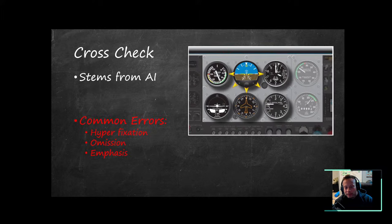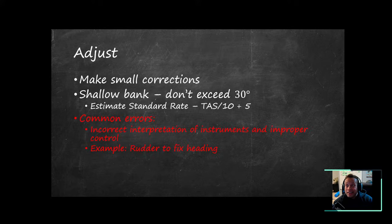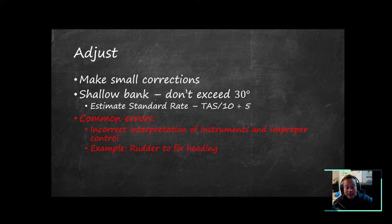The bank instruments are mostly your gyroscopic instruments: the attitude indicator gives you angle of bank, the turn coordinator tells you whether you're on a standard rate turn and the quality of your turn, and the heading indicator gives you heading information. Power instruments are your tachometer and manifold pressure gauge. Once established — nose on the horizon, wings level, trimmed, cross-checked — make small corrections to keep the airplane where you want it, doing shallow banks, nothing greater than 30 degrees. Common errors: incorrect instrument interpretation, improper control, or using rudder to fix heading instead of to coordinate turns.